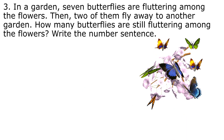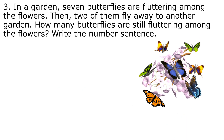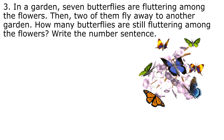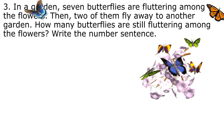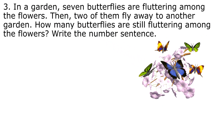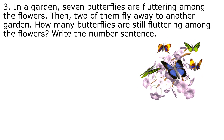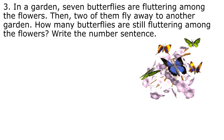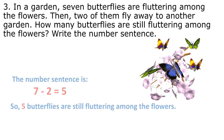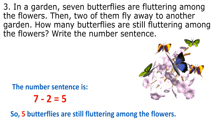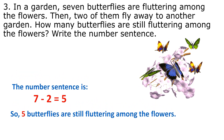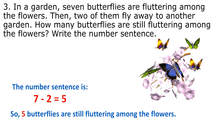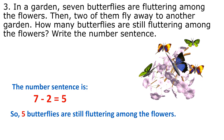Question 3. In a garden, seven butterflies are fluttering among the flowers. Then two of them fly away to another garden. How many butterflies are still fluttering among the flowers? The number sentence is 7 minus 2 equals 5. So five butterflies are still fluttering among the flowers.